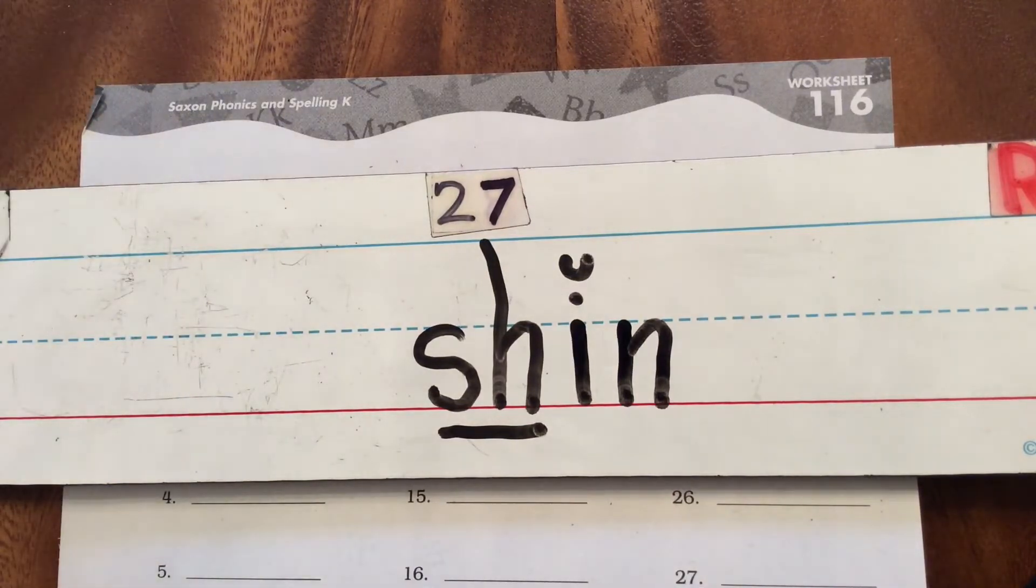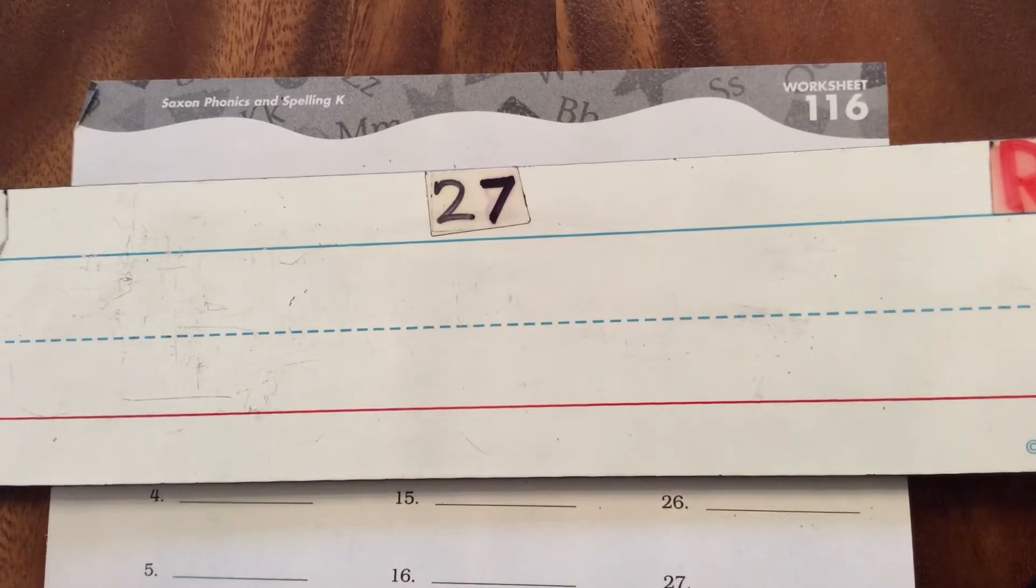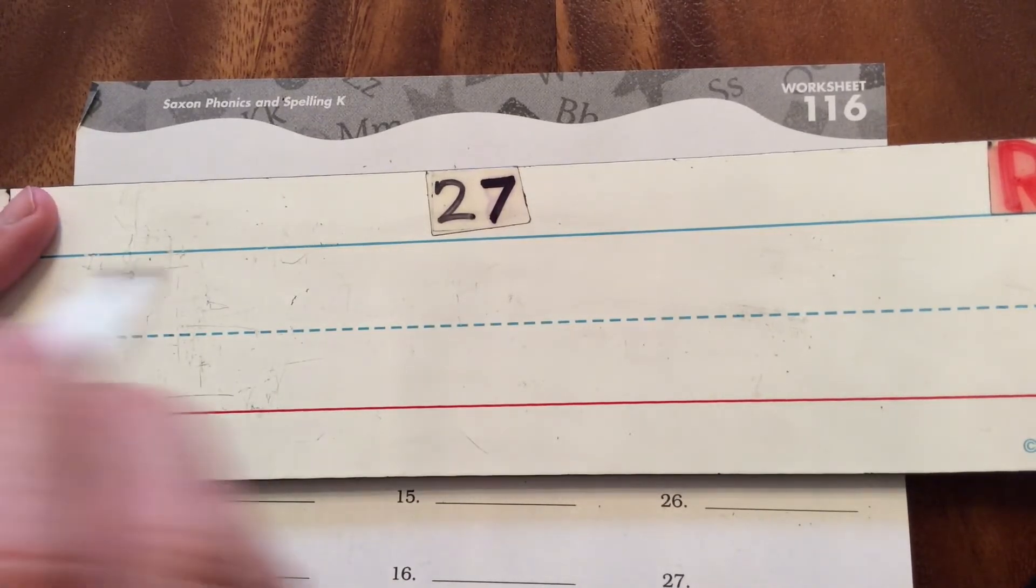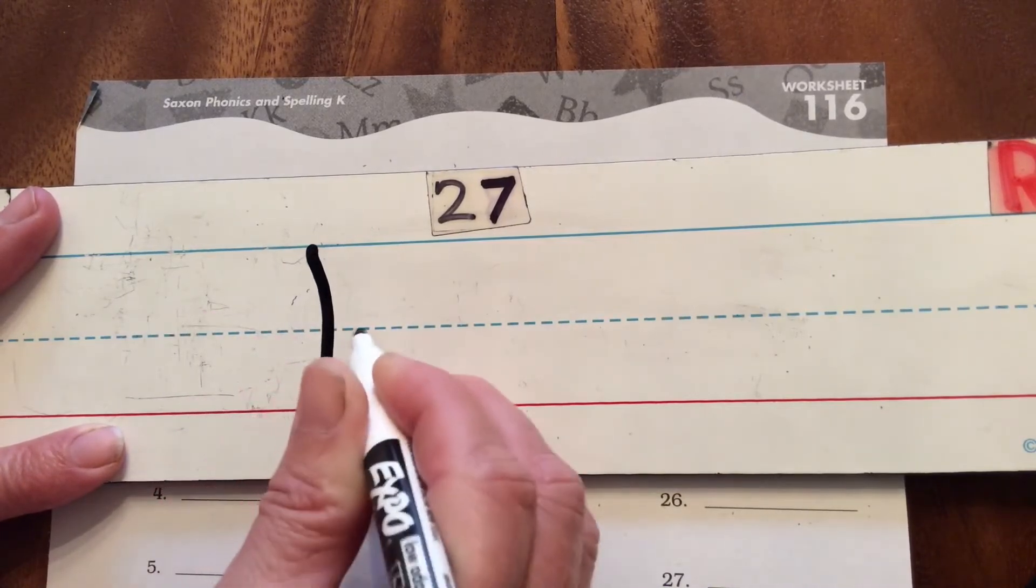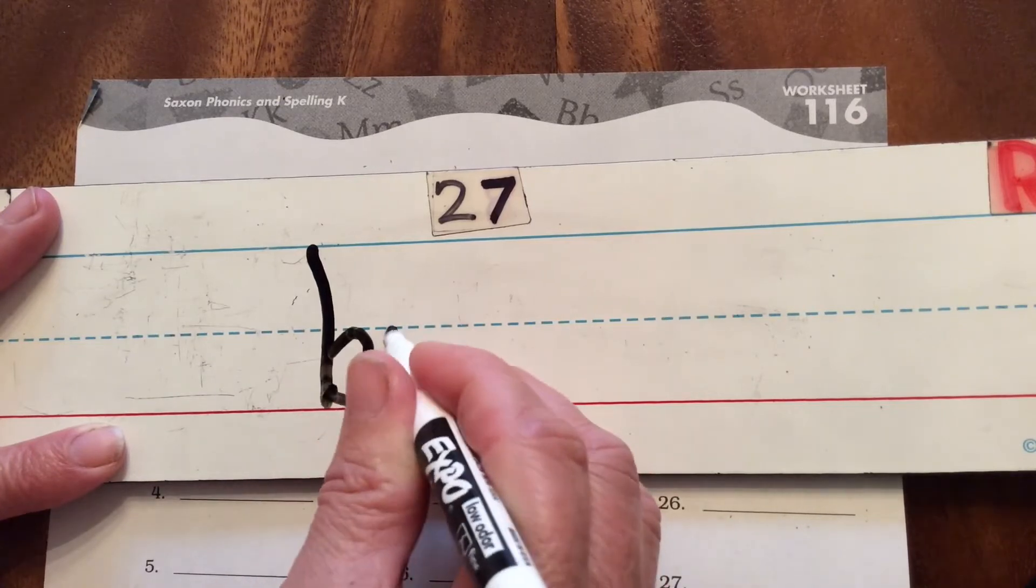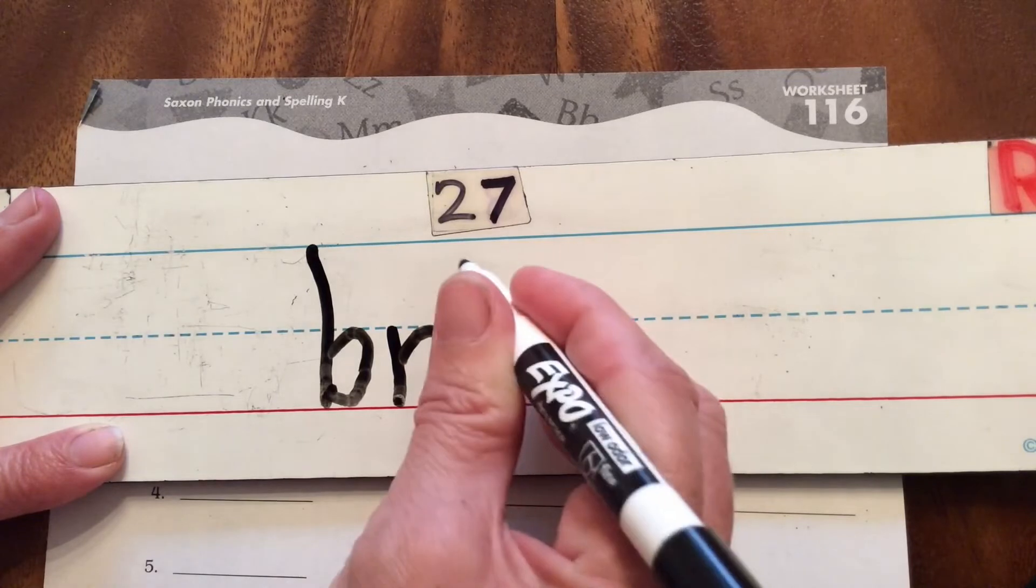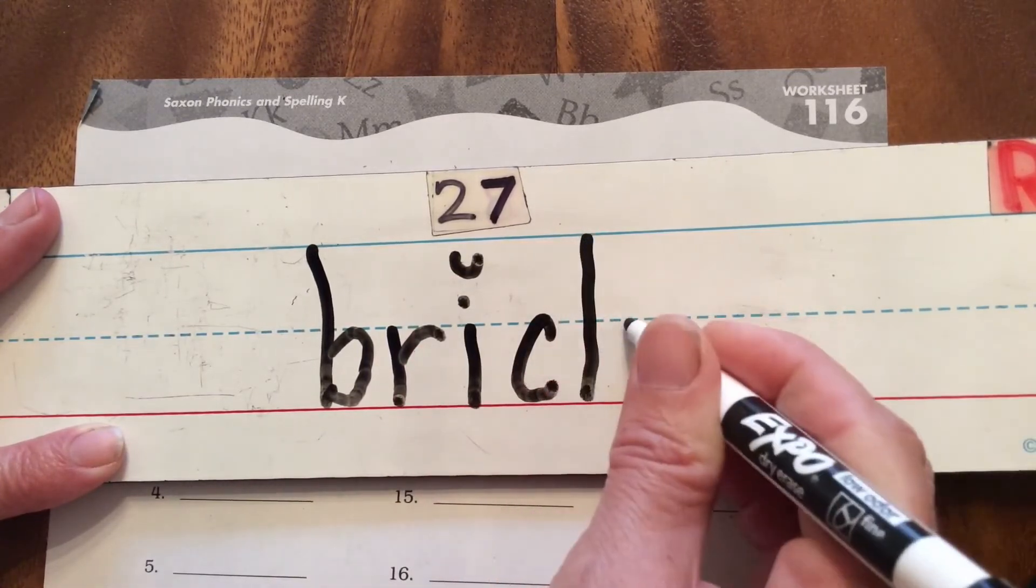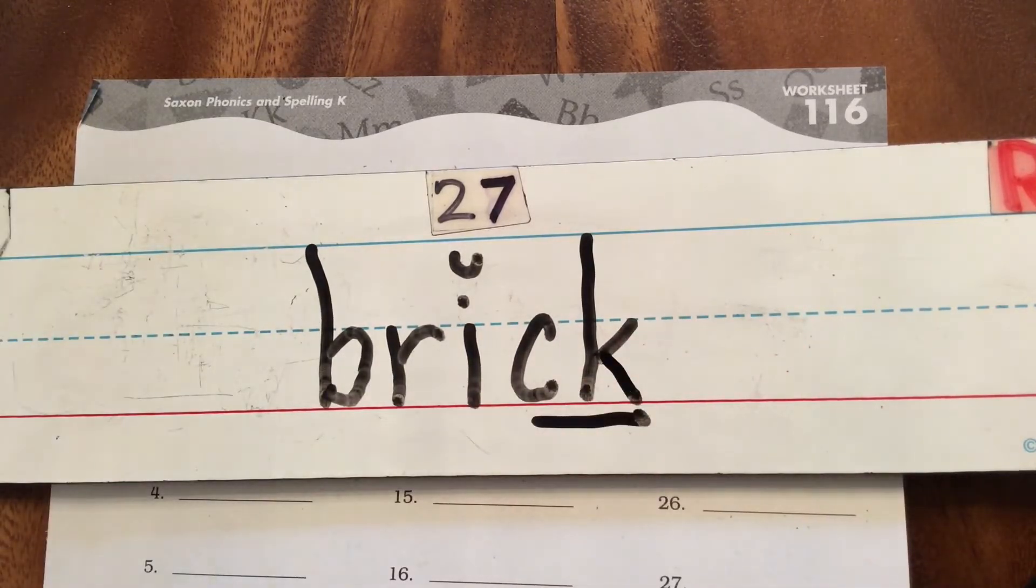I want you to try some as we spell them together with your writing string. I want you to try brick. Go ahead and try to spell it before Ms. Watson starts, and then I'll follow along. So yours should look like this: br, short I, and it's gonna have a ck since it has a short vowel. Brick will look like that.